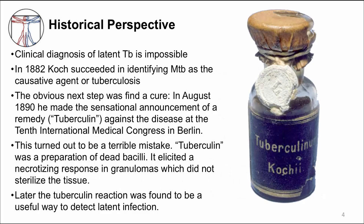I want to first give you a historical perspective about TB diagnosis. Clinical diagnosis of latent TB infection is impossible — remember that the person is asymptomatic. In 1882, Koch was able to identify MTB as the causative agent of tuberculosis, and the next obvious step was to find a cure. In August of 1890, Koch made a sensational announcement of a remedy against TB disease at the 10th International Medical Congress in Berlin. It was called tuberculin, and you can see a vial of it in the photo. This turned out to be a terrible mistake. Tuberculin was a preparation of dead bacilli that elicited a necrotizing response in granulomas, but did not sterilize tissue. It was later that the tuberculin reaction was noted to be a useful way to detect latent TB infection.